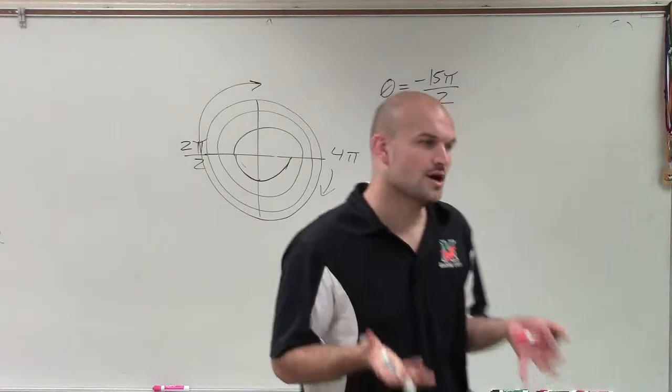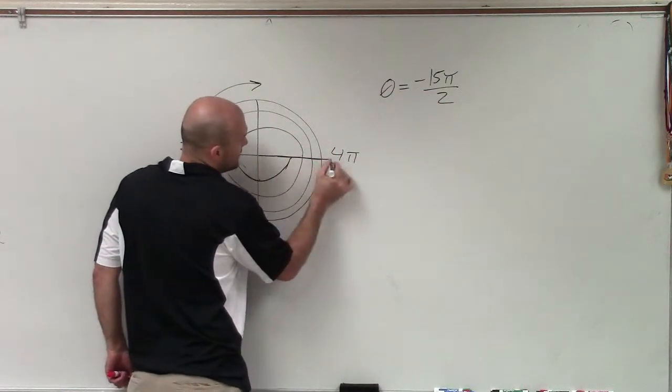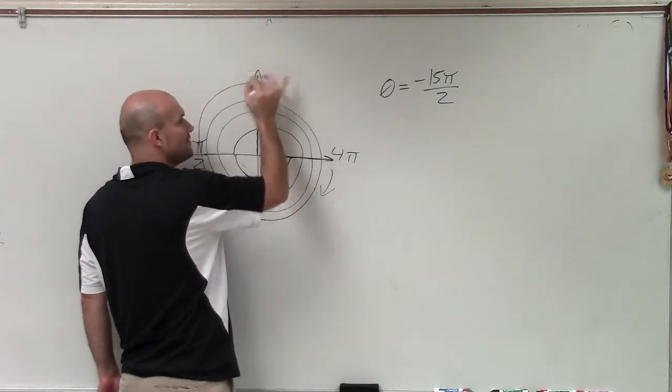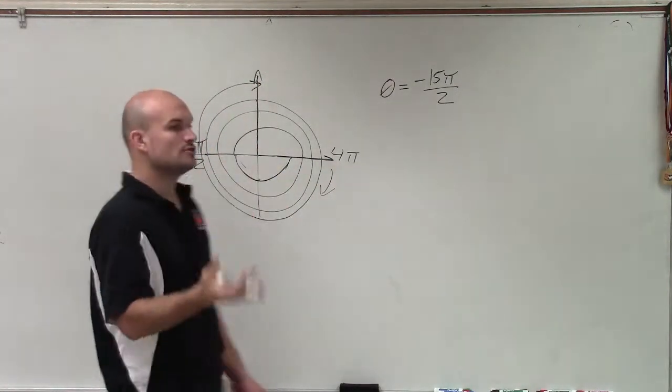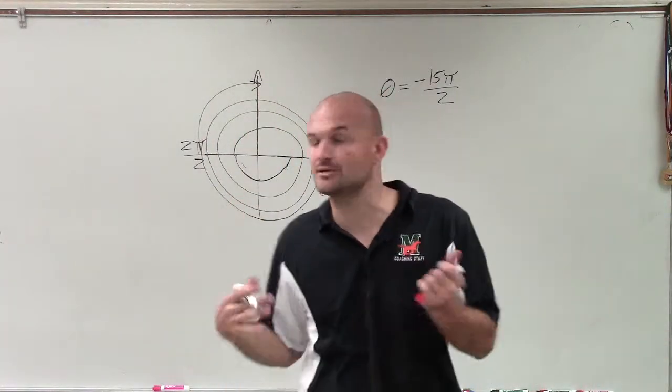Now, when we're determining coterminal angles, what we say is, here's my initial side, right? This is the side that my angle started on. And here's the side that my angle is going to end on. So that's the initial, that's the terminal side. When determining coterminal angles, we need to find the angles that have the exact same initial and terminal side.